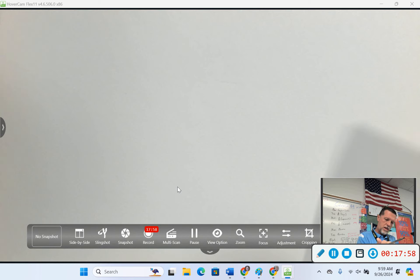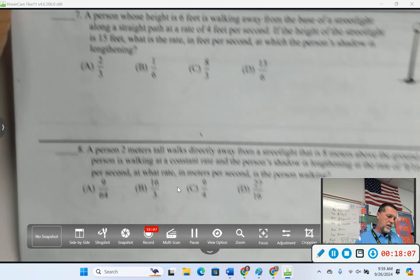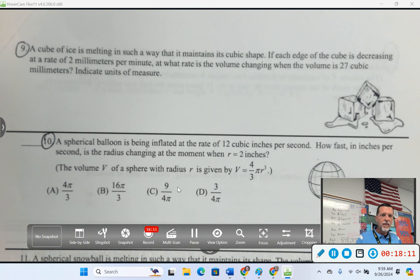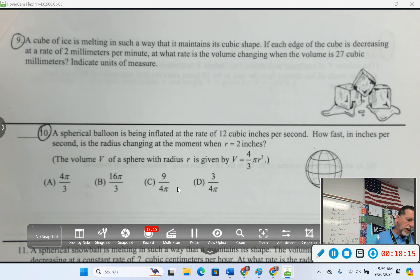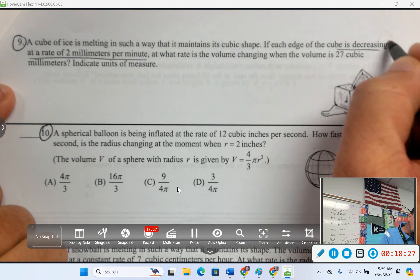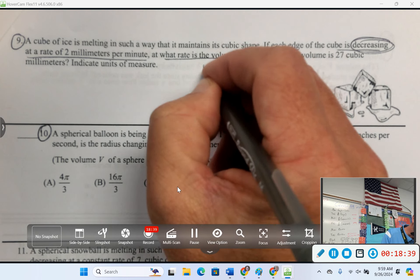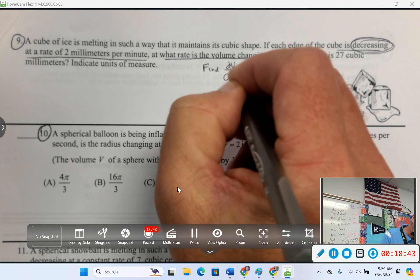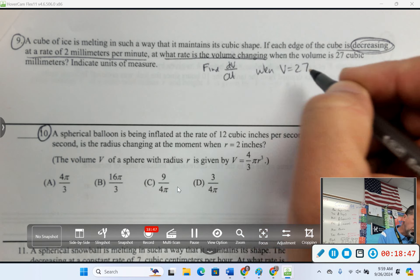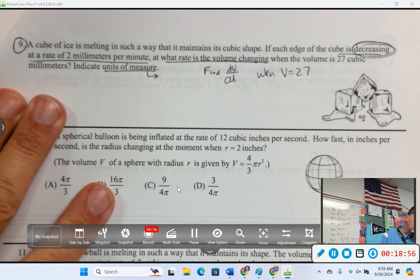Let's look at, so we start at number 6. That's a ladder problem. 7's another light post problem with the man walking. 8's a light post problem. Let's do number 9. The cube of ice is melting in such a way that it maintains its cubic shape. If each edge of the cube is decreasing at a rate of 2 millimeters per minute, also decreasing. What is decreasing probably going to mean? Probably going to mean negative somewhere. At what rate is the volume changing? Find dV/dt when V equals 27. Indicate units of measure. Let's just go ahead and do units right now before we forget about it.